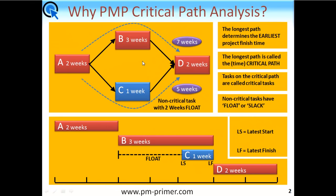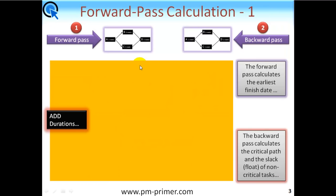For a typical project we need a recipe for success. What you actually do is two calculations: one, a forward pass — starting at the left-hand side and moving left to right, calculating as you go — and then a backward pass, coming backwards and calculating backwards. When you perform the forward pass, you get the earliest finish date for your project. When you do the backward pass, this calculates the critical path and the slack or float of the non-critical tasks. The first thing to understand before doing the forward pass is that we add the durations. There are two simple rules going forward and two simple rules going backward.